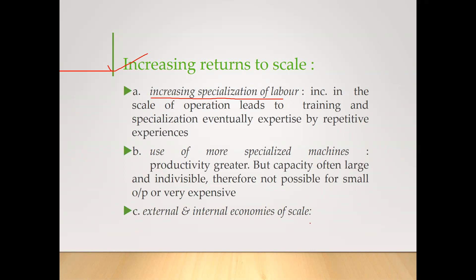For example, consider two specialized persons in a department — one specialized in marketing and one in finance. Suppose for two days we interchange their roles. The marketing person, who was selling 20 units per day, is now sitting in the finance seat, and the finance person is now on the marketing seat. The finance person can do marketing, but because he is not expert in it, he might sell only 8 or 10 units per day — not as good as the marketing person who sold 20 units. This illustrates increasing return to scale: the right specialization leads to greater output.